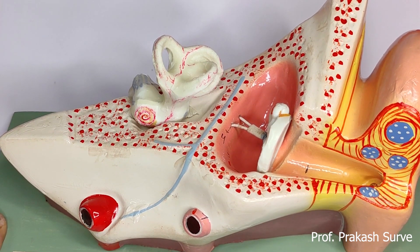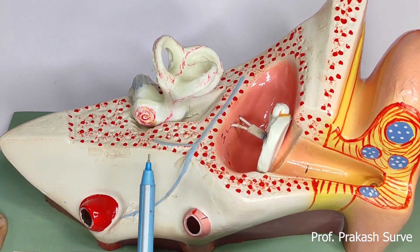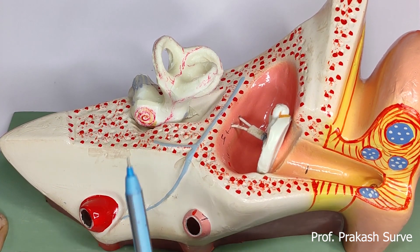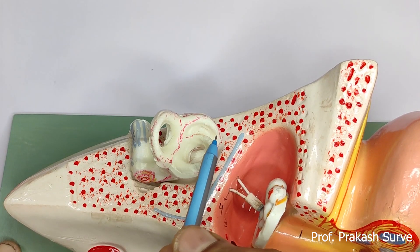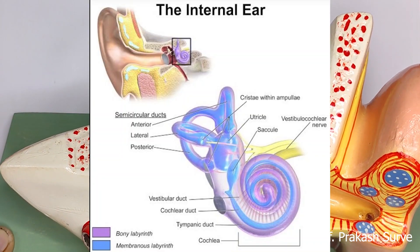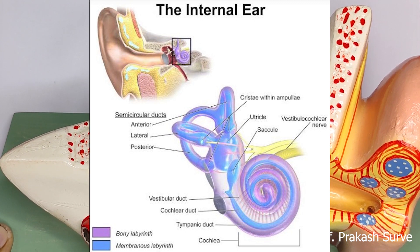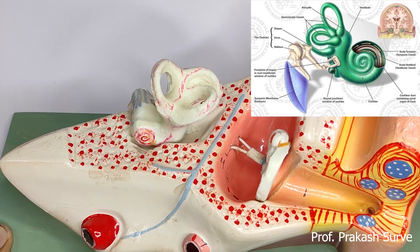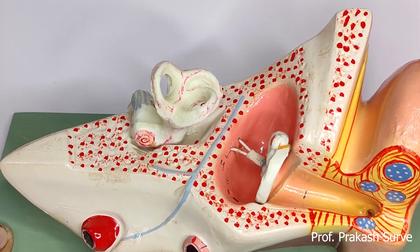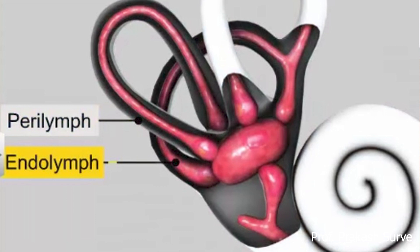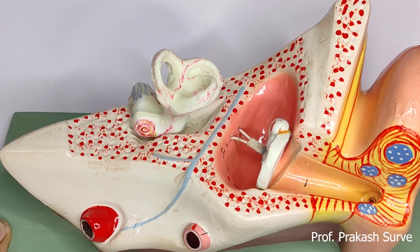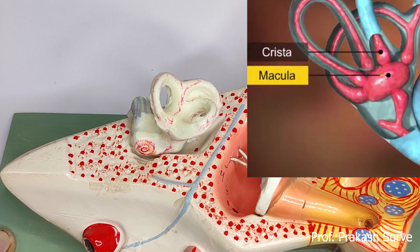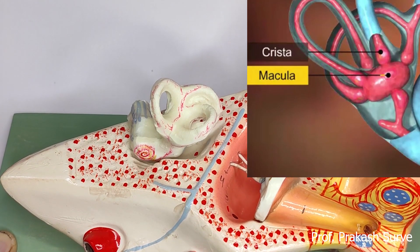Beside the cochlea, the inner ear also has a vestibular apparatus composed of three semicircular canals and the utriculosaccular region with the otolith organ. All three semicircular canals lie in different planes at right angles to each other. These canals are filled with endolymph. The base of each canal has an ampulla, containing a sensory spot called the crista, which helps in maintaining equilibrium.